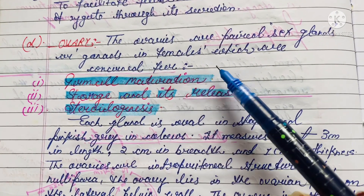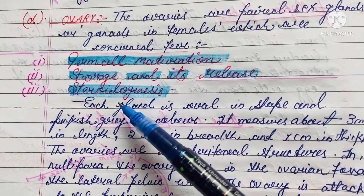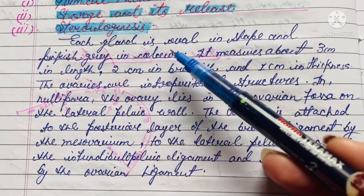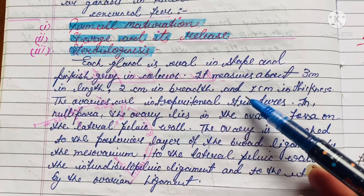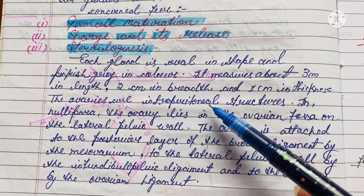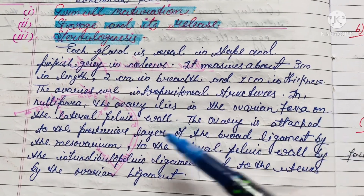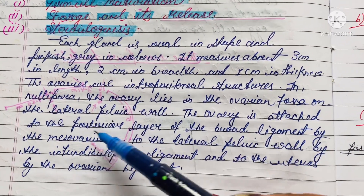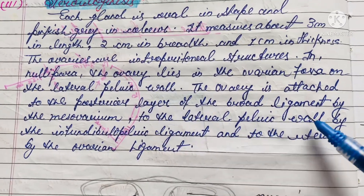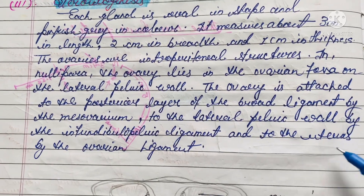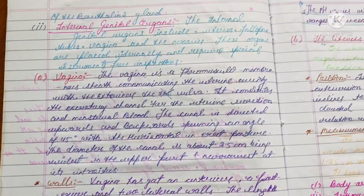The ovaries are paired sex glands in females, concerned with germ cell maturation, steroidogenesis, and its release. Each gland is oval in shape and pinkish gray in color, measuring about 3 centimeters in length, 2 centimeters in width, and 1 centimeter in thickness. The ovaries are intraperitoneal structures. In nulliparous women, the ovary lies in the ovarian fossa on the lateral pelvic wall. It is attached to the posterior layer of the broad ligament by the mesovarium, to the lateral pelvic wall by the infundibulopelvic ligament, and to the uterus by the ovarian ligament.